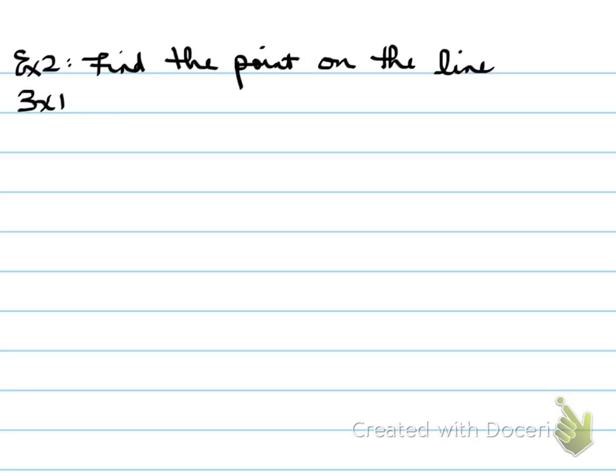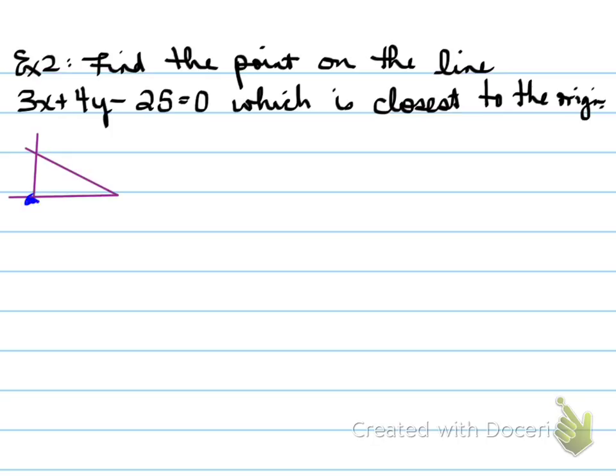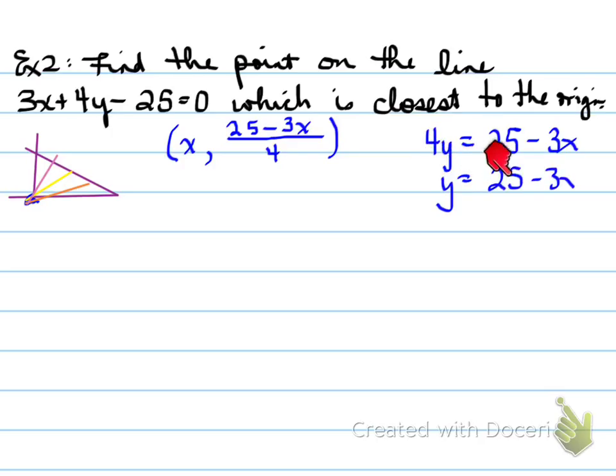Example number two. Find the point on the line 3x plus 4y minus 25 equals zero, which is closest to the origin. So we're going to look at this question using calculus. So, what that means is you've got some line that is connected. So the line that we're looking at is this line right here. And at what point is it closest to this origin? And that's what the key is. So, you have a point on the line, which is x comma 25 minus 3x over 4. Where did that come from? Well, it's a point on this line right here. If I isolate for y, as you see here, y is equal to 25 minus 3x all over 4.